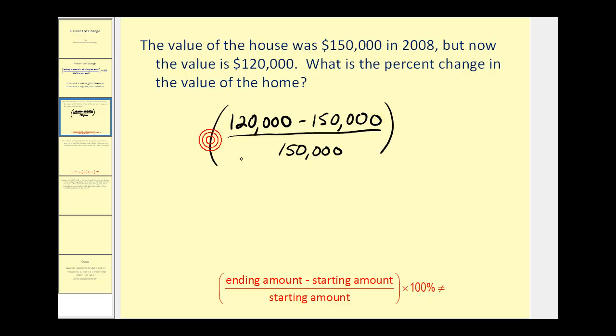Then we'll take this, which will be the decimal form of the percent of change, and multiply it by 100 percent, which is like multiplying by one. We're just converting the decimal to a percent.